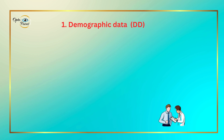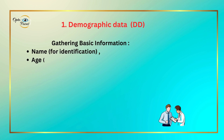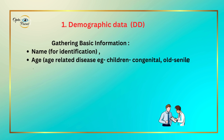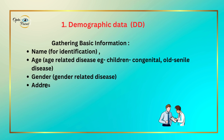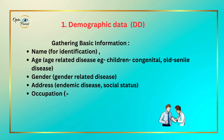Demographic data involves gathering basic information such as the patient's name for identification, age and age-related diseases (e.g., children, congenital ocular diseases), gender and gender-related diseases, address and endemic diseases, social status, and occupation and occupation-related diseases.